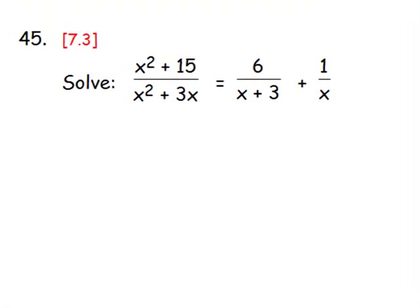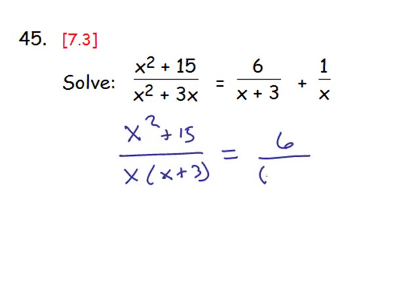Here's another example from section 7.3. To decide on the LCD, we need to look at the denominators in factored form. The first fraction has a factored form of x times x plus 3 in the denominator, equals this fraction 6 over the quantity x plus 3, that's the only factor that it has, and plus 1 over x, again the only factor that it has.